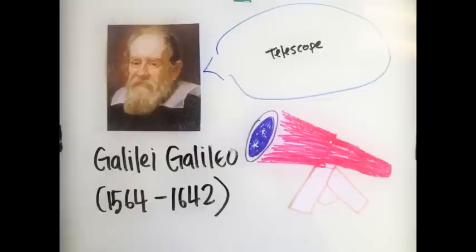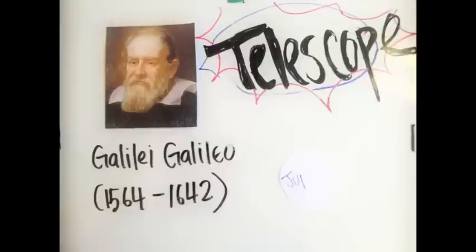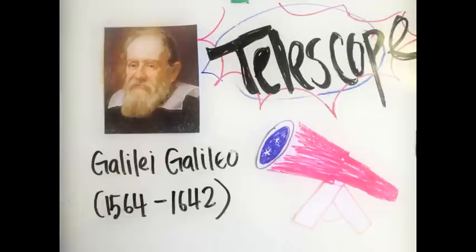Galileo was the first to observe the craters of the moon, the sunspots, the ring of Saturn, and the four large moons of Jupiter with his telescope.